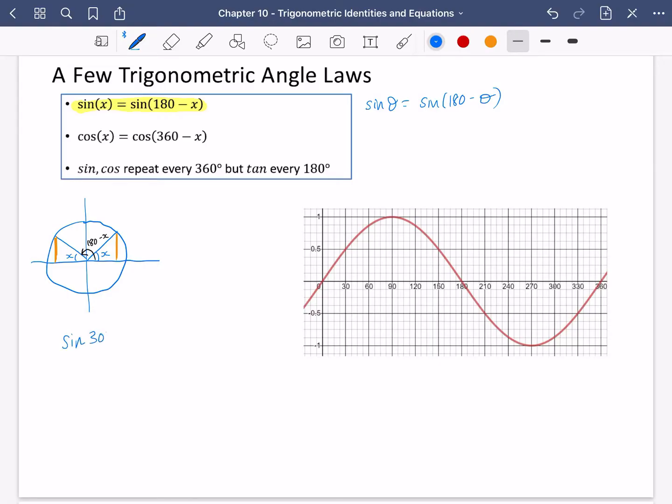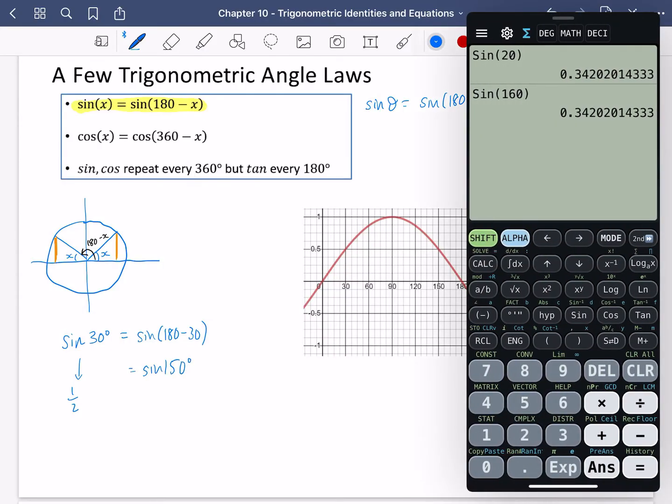Why not use the ones we had on the previous page? In fact, let's do the sine of 30 degrees. Now, hopefully you can remember that the sine of 30 degrees is a half. And we're saying that that's going to be the same as the sine of 180 minus 30, which is just the sine of 150 degrees. Let's check that that is true.